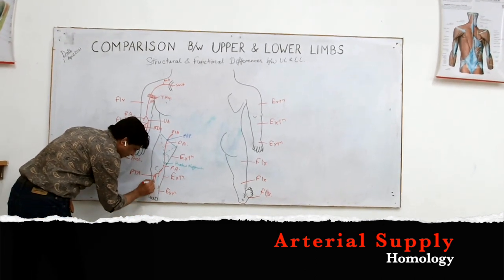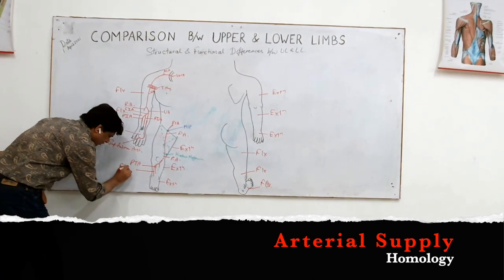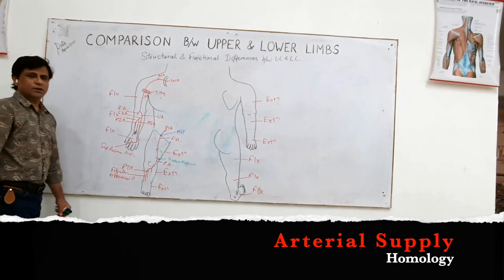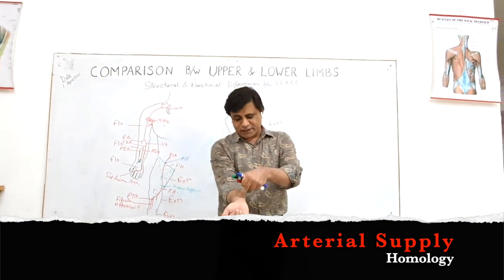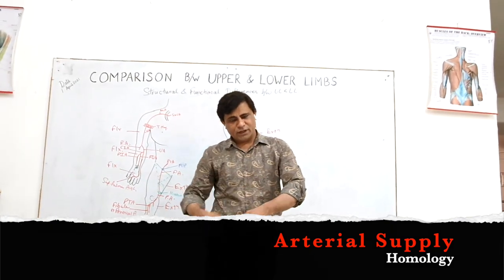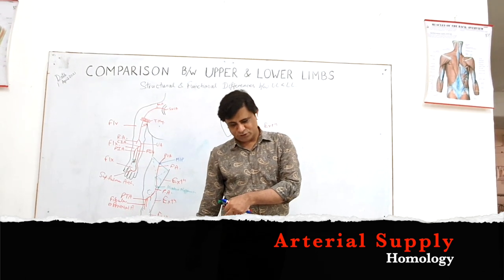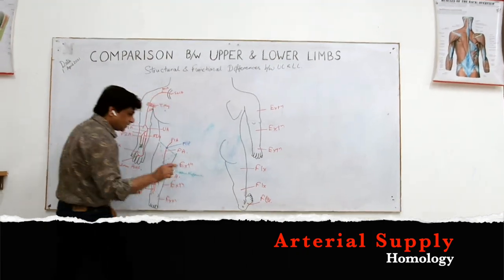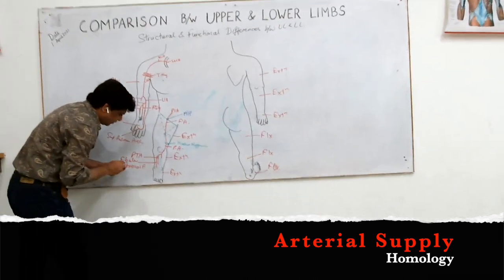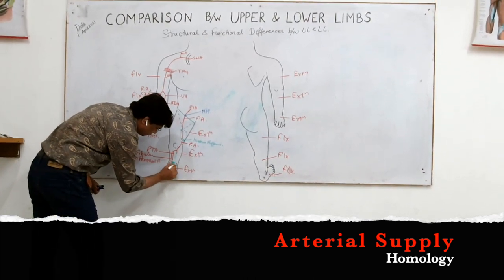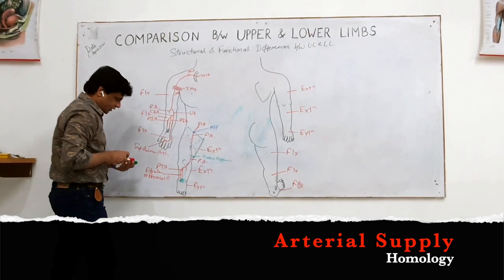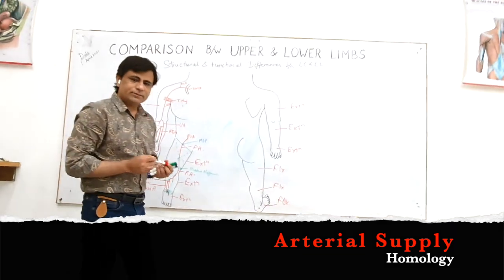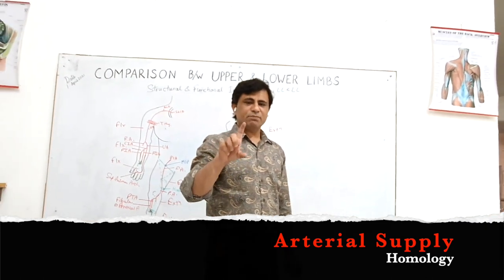In the back of the leg, the posterior tibial artery gives the peroneal (fibular) artery. Now, in the homology, it should be the posterior interosseous artery that perforates the interosseous membrane to reach the front of the leg — but instead it is the peroneal artery that perforates the interosseous membrane at the junction of the upper two-thirds and lower one-third, entering the front of the leg.